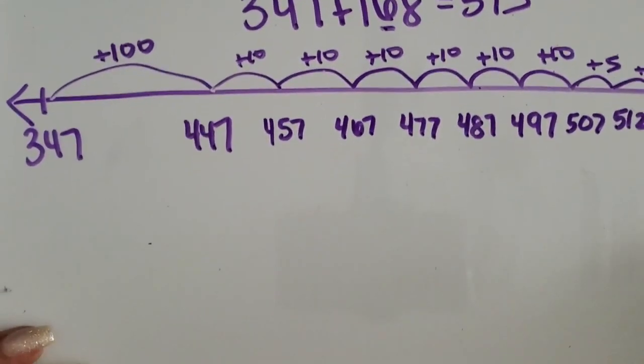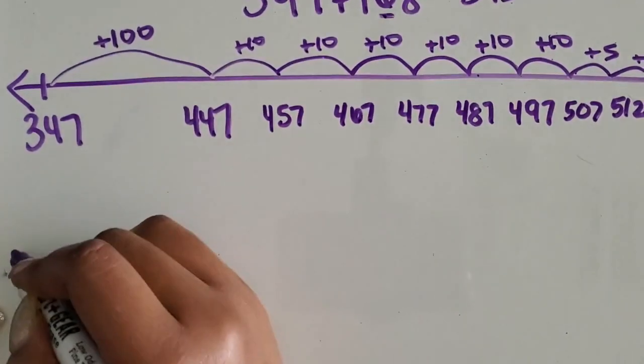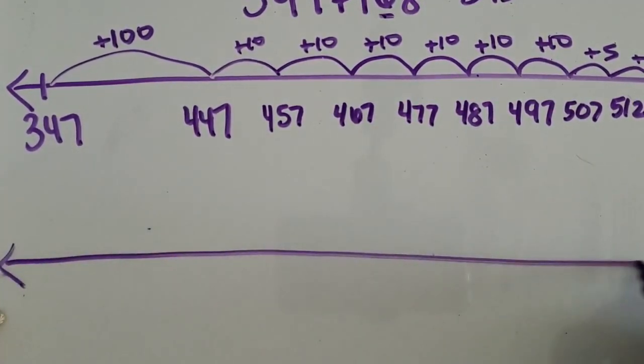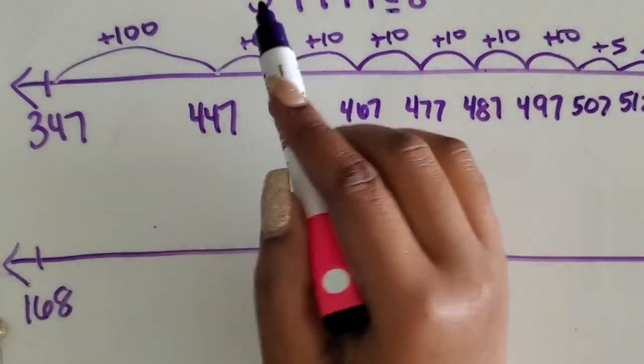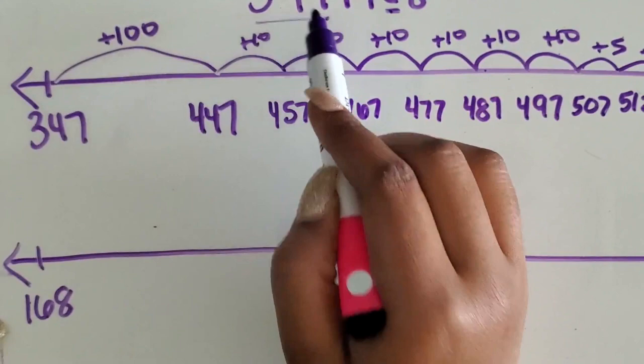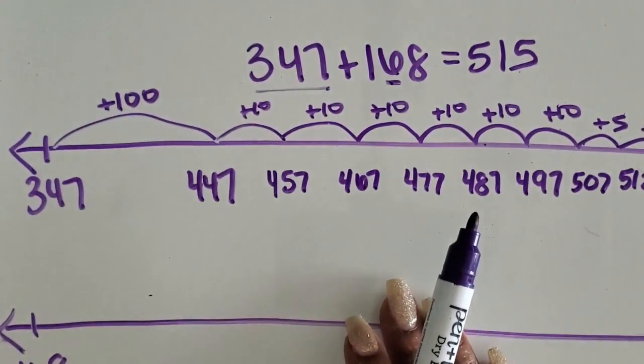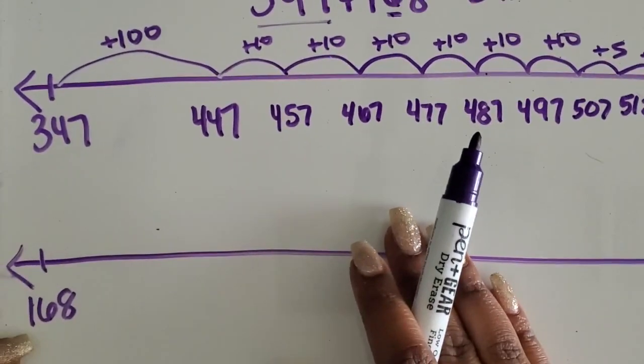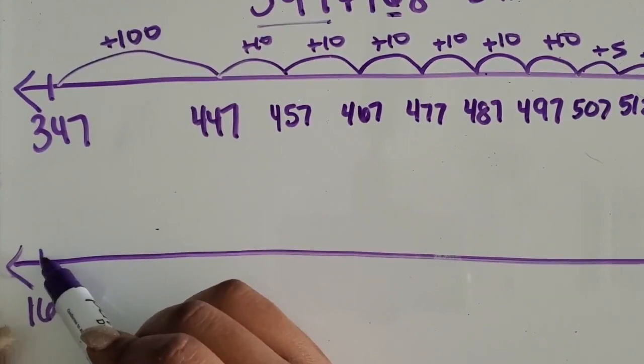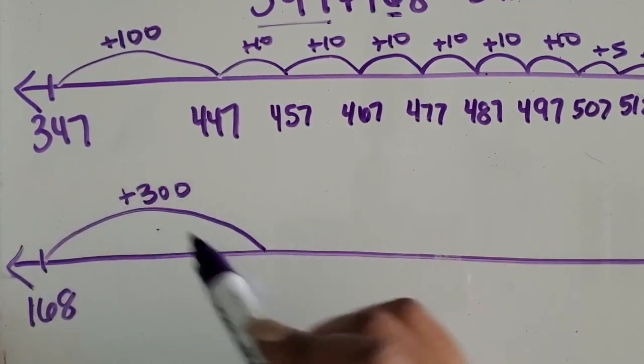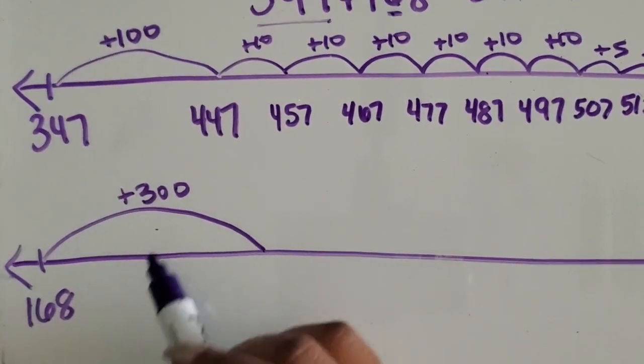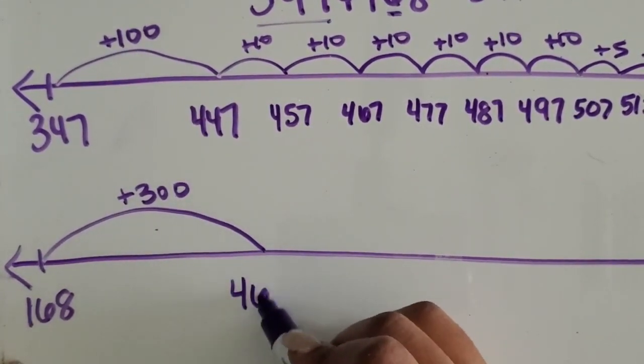You can also start with the smaller number. So if we have 168, we can add the 300s from 347. I can do it all together as 300, or I can separate it into three separate hundreds. So 300 more would be 468.